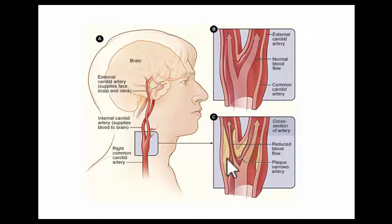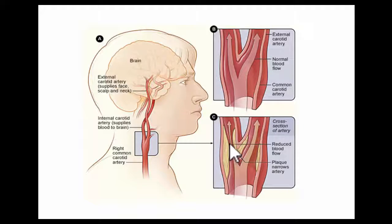The plaque consists of cholesterol, calcium, platelets, and proliferation of smooth muscle cells. As the plaque builds up, the lumen of the carotid artery becomes narrower and narrower, and when it reaches a critical level — like 70 to 80 percent — people can manifest with symptoms.